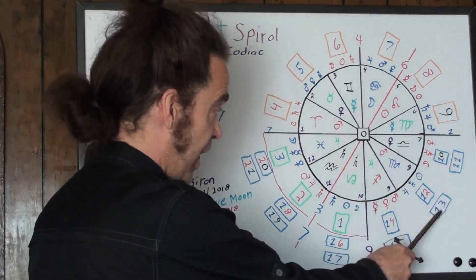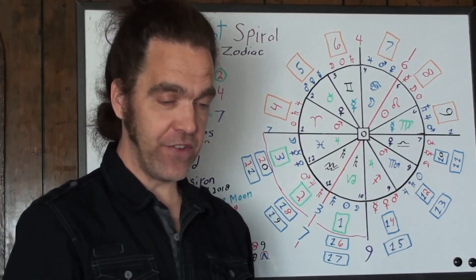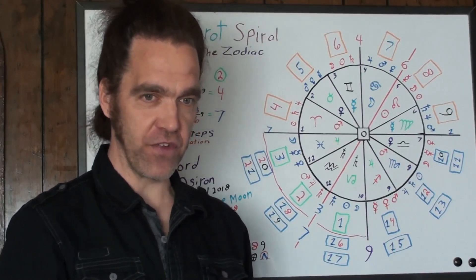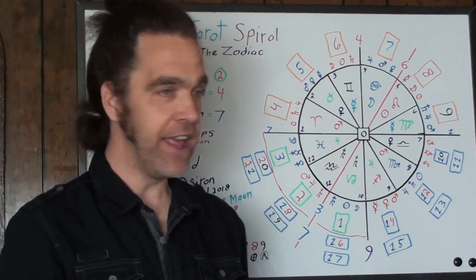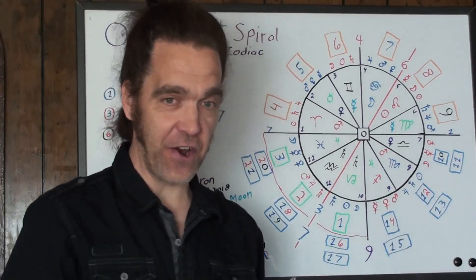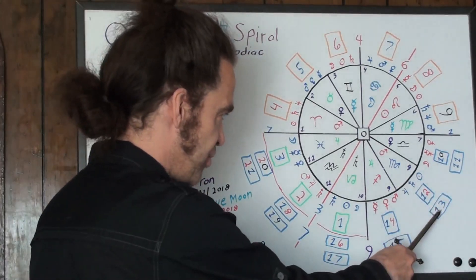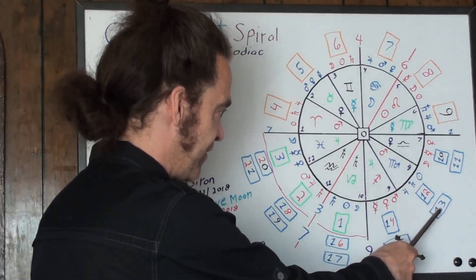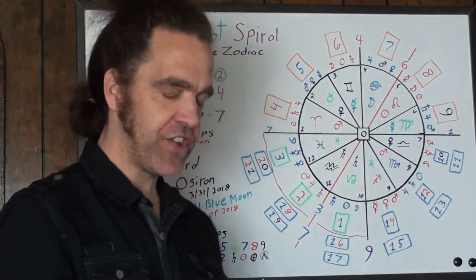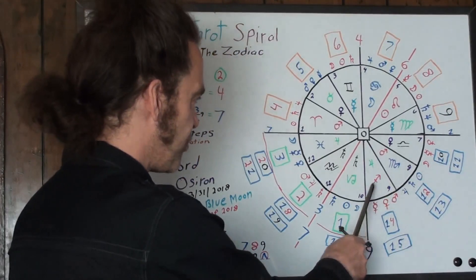The next card, death, is the death card. People say the death card is only a symbolic metaphor for other things, but it's really not — the death card is the death card. The emperor dies here. This brings us to one of the most amazing houses in the Osseron Tarot Spiral — house nine, Sagittarius.